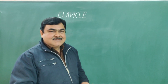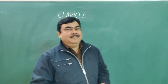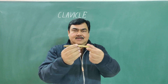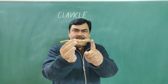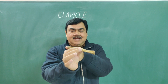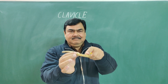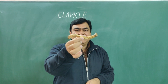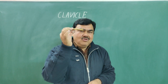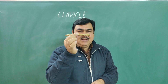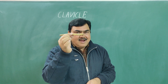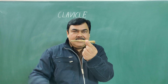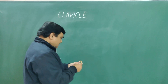Now we'll discuss the anatomy of the clavicle. This bone is the clavicle. It has two ends: this is the medial end, this is the lateral end, and this is the shaft. The shaft is curved — it is not a straight shaft. This is the only bone which lies horizontally in the body. The term 'clavicle' means 'key'; it rotates like a key during abduction.